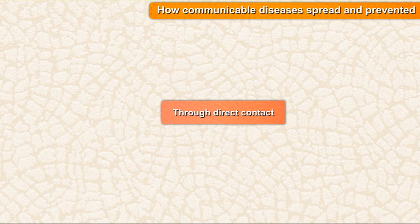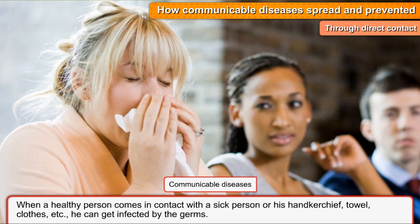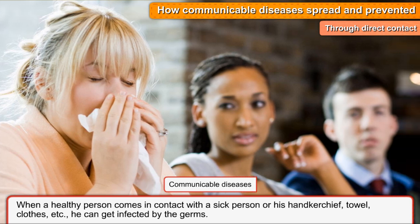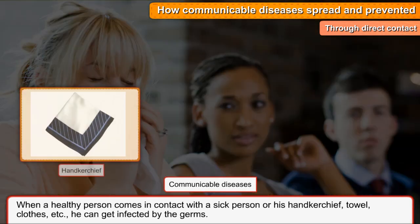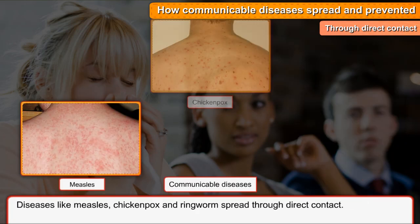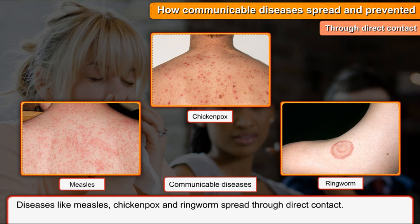Through direct contact: When a healthy person comes in contact with a sick person or his handkerchief, towel, clothes, etc., he can get infected by the germs. Diseases like measles, chickenpox, and ringworm spread through direct contact.